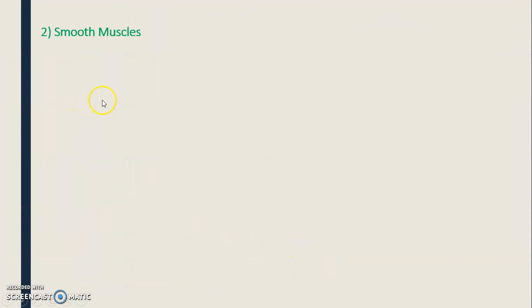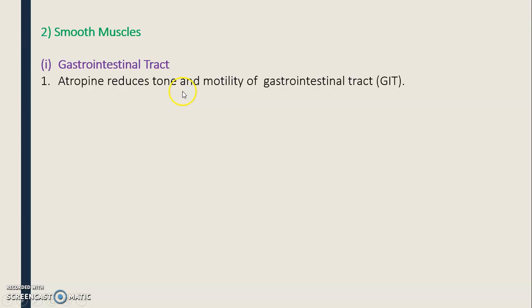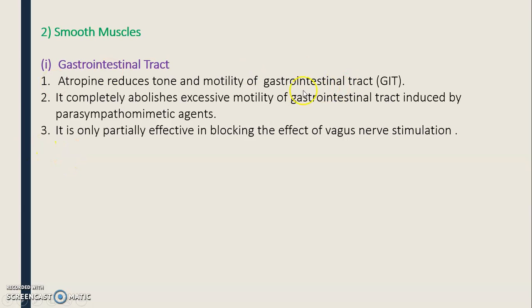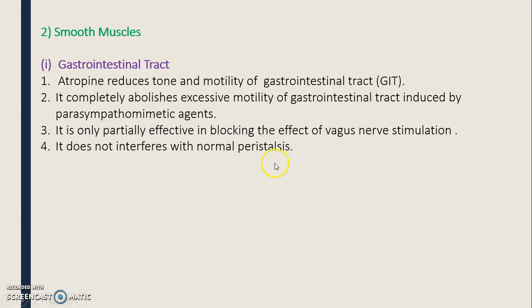Next, the effect on smooth muscle, starting with the gastrointestinal tract. Atropine reduces the tone and motility of the gastrointestinal tract. It completely abolishes the excessive motility of the GI tract induced by parasympathomimetic agents. It is only partially effective in blocking the effect of vagus nerve stimulation, and does not interfere with normal peristalsis.